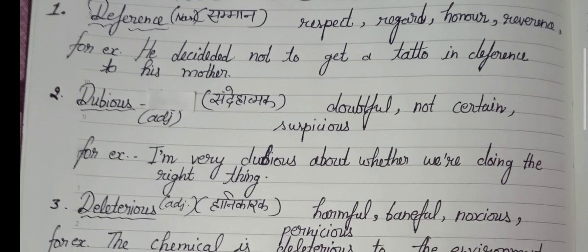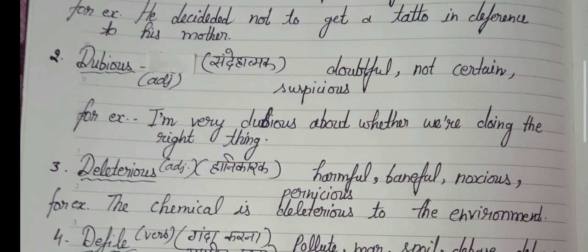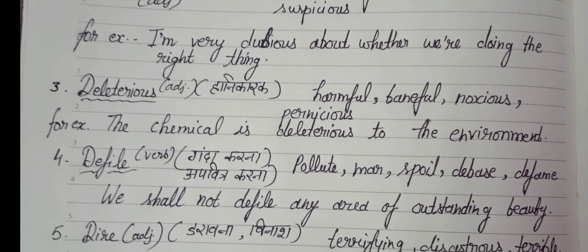Word two: dubious. We use this word as an adjective. Its meaning is doubtful, not certain, suspicious — 'sandehatma' in Hindi. For example: 'I am very dubious about whether we are doing the right thing.'